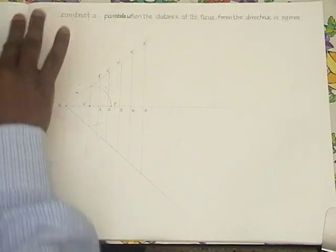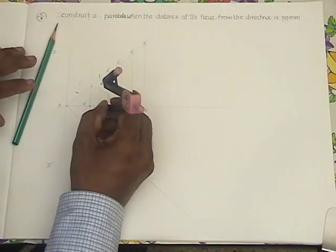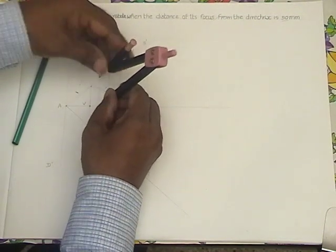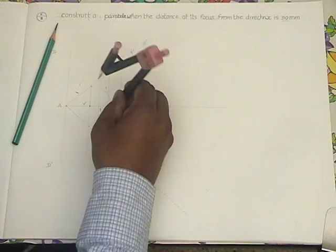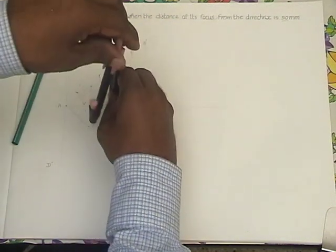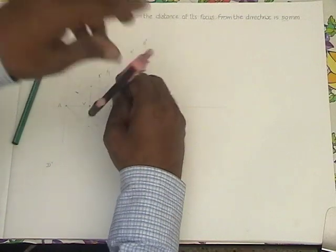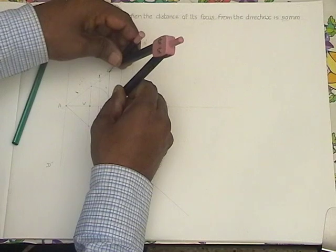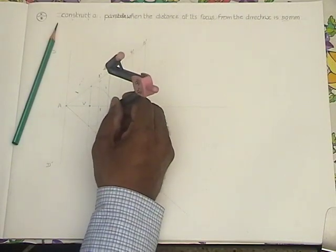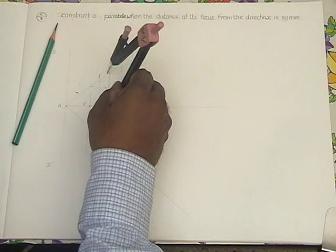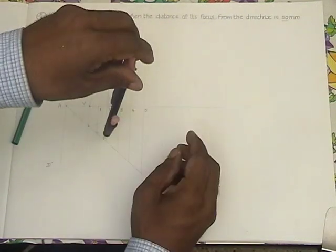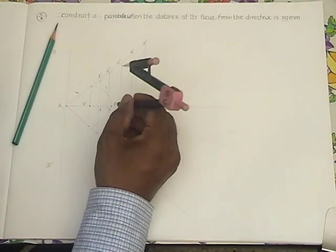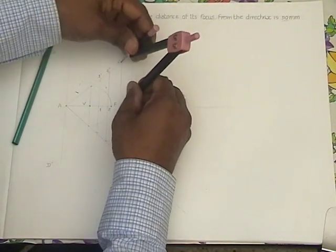Now, with the help of compass, check this one one dash distance, keep one one dash radius. With the F as center, mark the arc on each one dash line. Similarly, take two dash. With F as center, you can mark the arc on these two ends. Again, you can take the three dash distance.